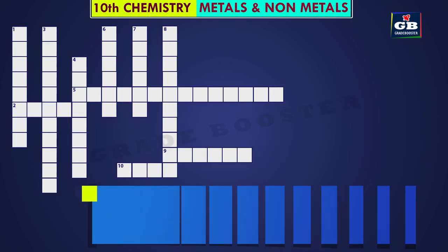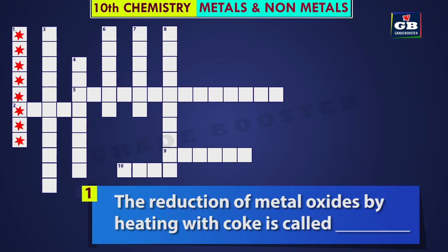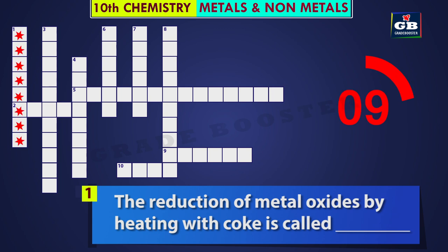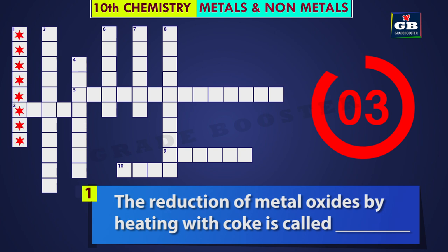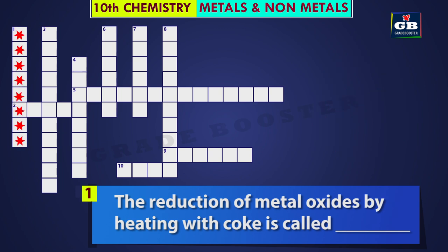Let us see the first one. One down: the reduction of metal oxides by heating with coke is called — did you get the answer? The answer is smelting. The reduction of metal oxides by heating with coke is called smelting.